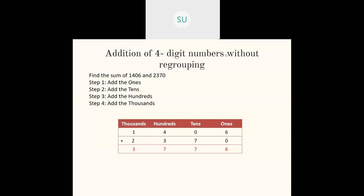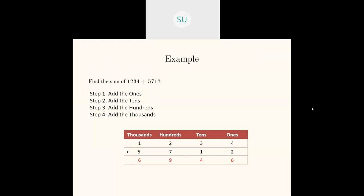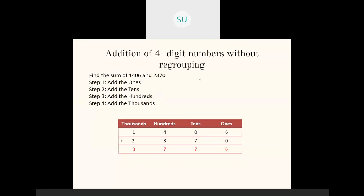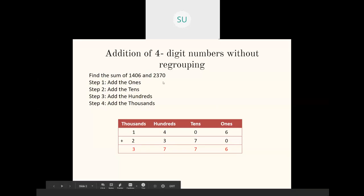So we learned two types of addition. The first one was addition of four-digit numbers without regrouping, and then we learned addition of four-digit numbers with regrouping. So first let's see what is addition of four-digit numbers without regrouping. They give you two four-digit numbers and ask you to add them. What you'll do is first write the numbers in columns — that is in a table, vertically, in their place values.